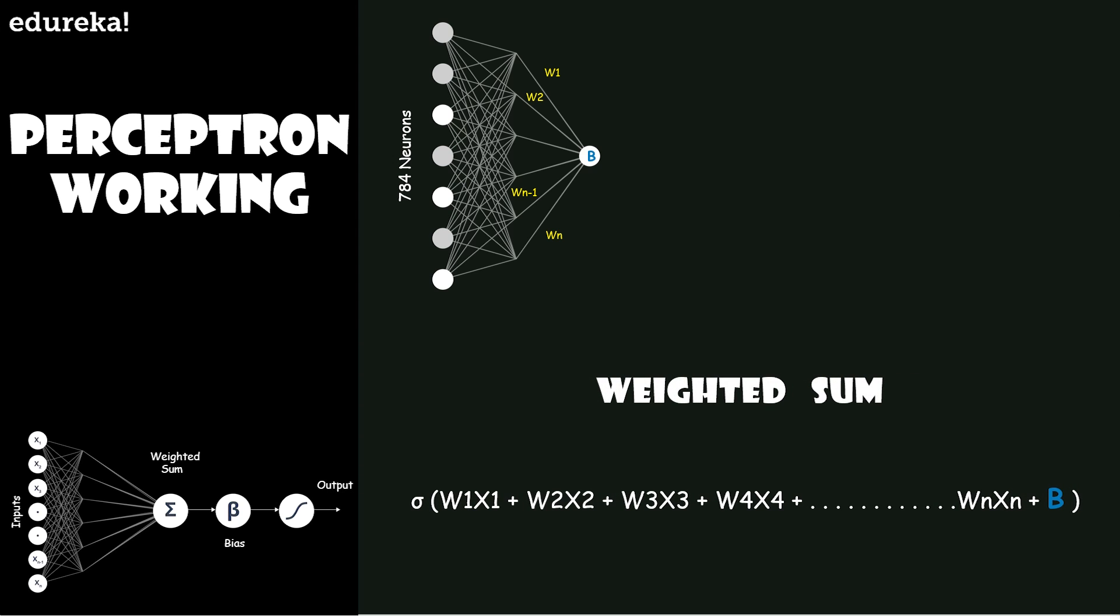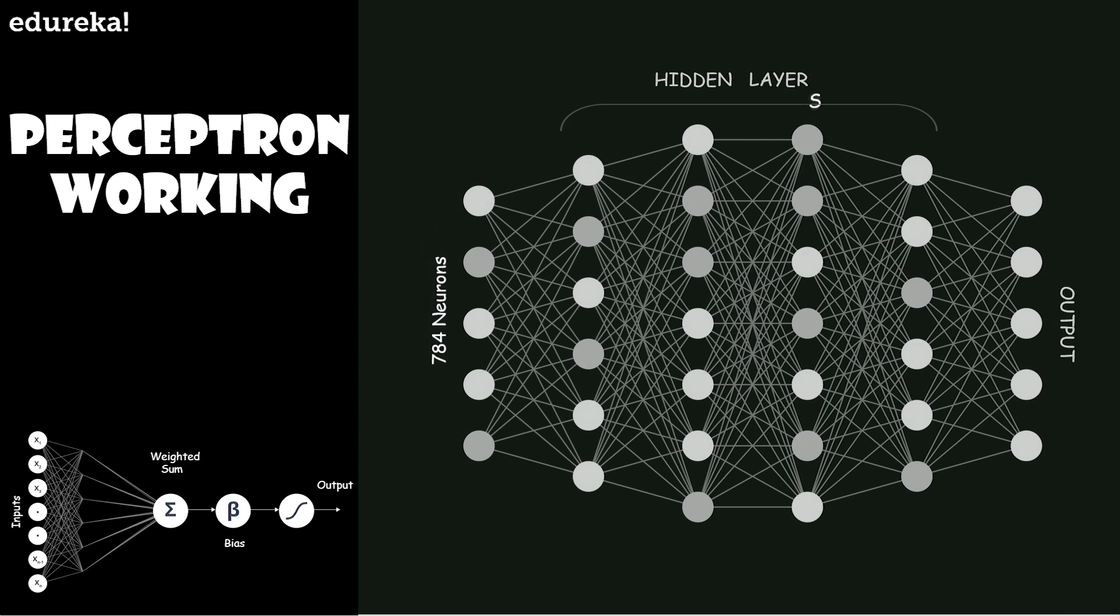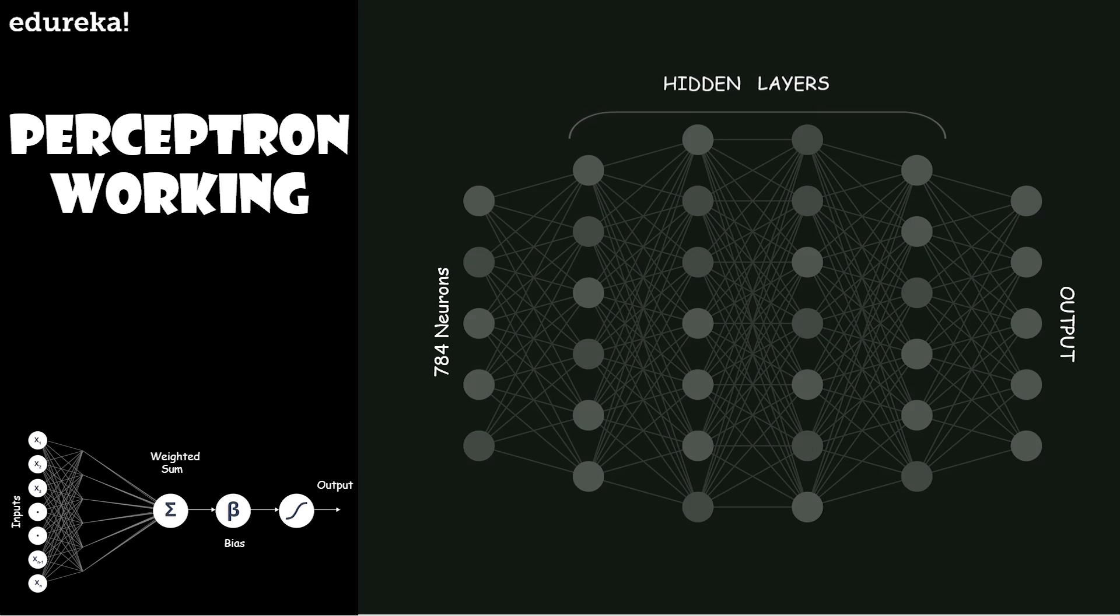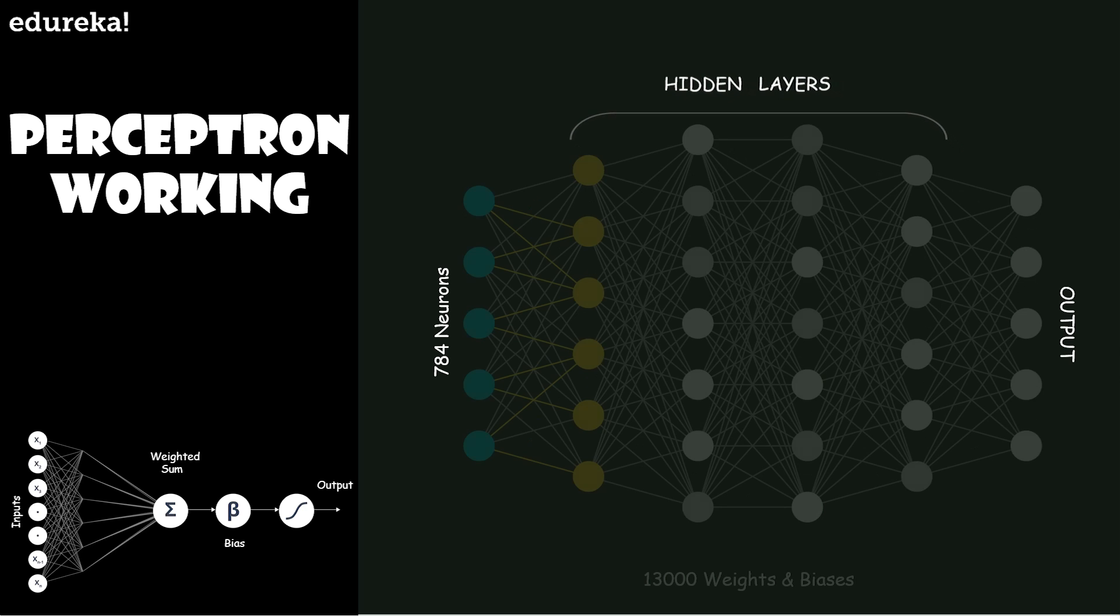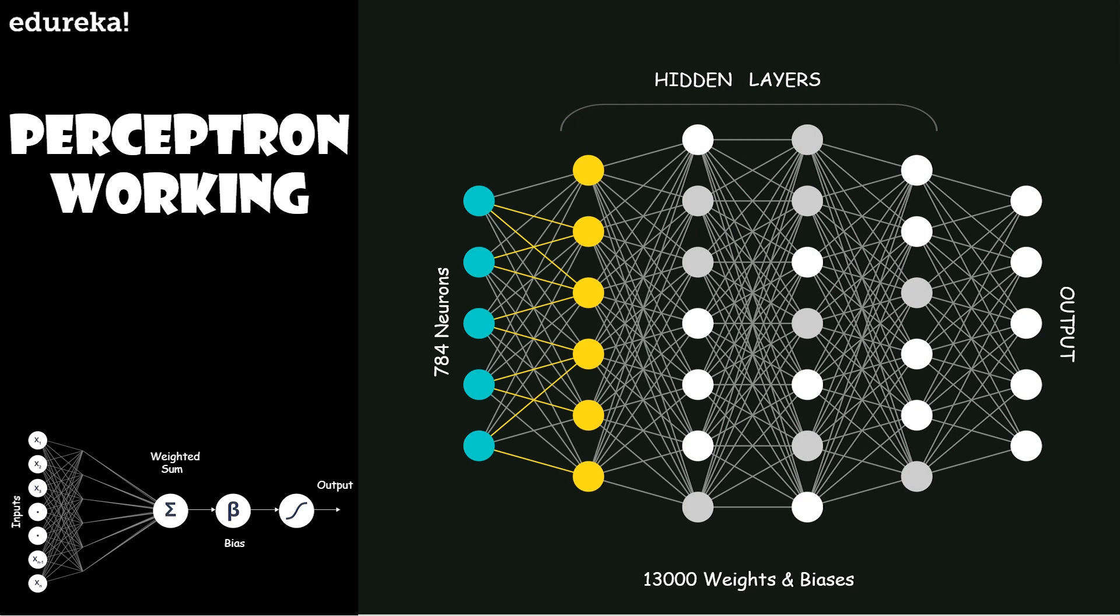What about the perceptrons in the second layer? Each of those perceptrons is making a decision by weighing up the results from the first layer of decision making. In this way, a perceptron in the second layer can make a decision at a more complex and more abstract level than the perceptrons in the first layer.